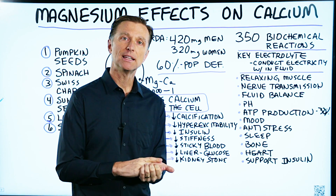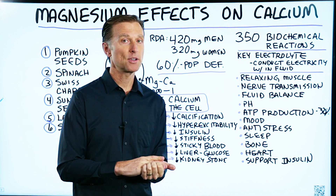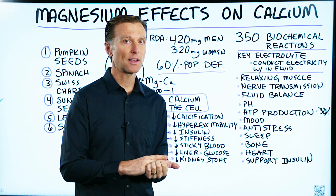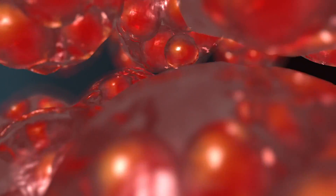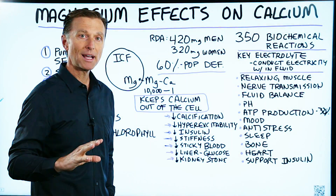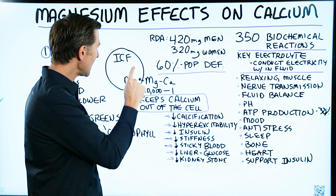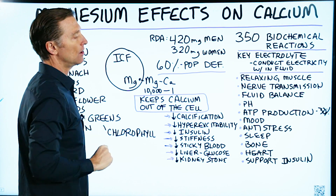Subclinical means that it doesn't show up in a blood test, but you're deficient because the actual deficiency is inside the cell. 98% of all the magnesium is inside the cell, not outside the cell.